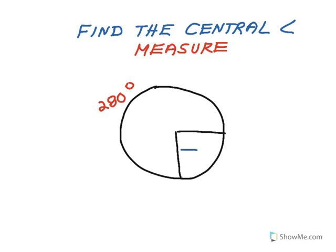In the next example, I need to find the central angle that goes with the minor arc shown. The arc measure is 360 degrees minus 280 degrees, which gives 80 degrees. So the central angle is also 80 degrees.